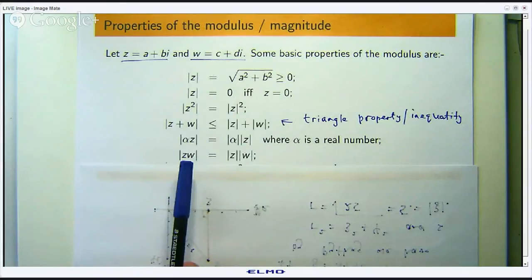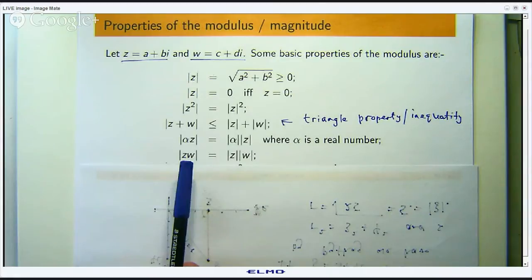I can connect the conjugate of z — z-bar — with the modulus in the following way. If you have a complex number and you multiply by its conjugate, it is the same as the square of the modulus. So this product is the square of the length from z to the origin.